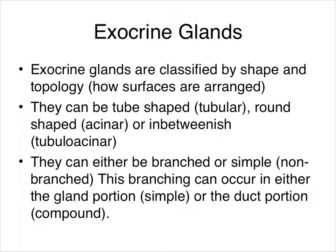Exocrine glands can also be either branched or simple. Simple means they do not have a branch — just one tube that goes where it needs to go. If they are branched, that means multiple glandular areas all feed into the same place. This branching can occur in the gland portion before the duct, in which case it is still considered simple, or the branching can occur in the duct portion. If more than one duct joins together, that is called a compound arrangement.